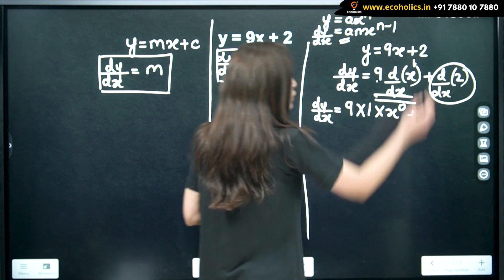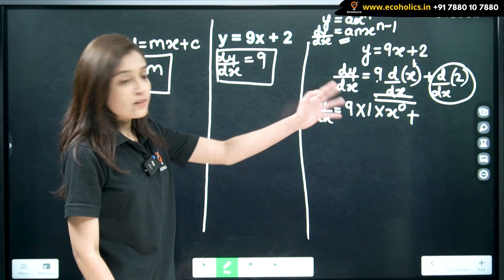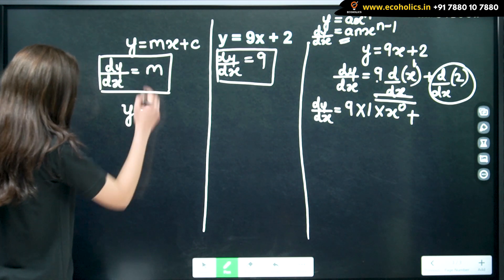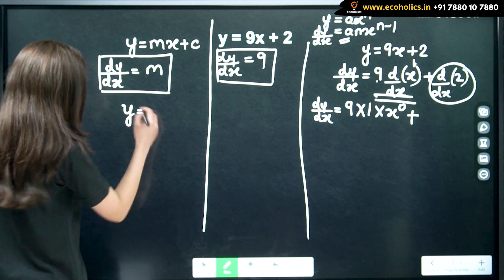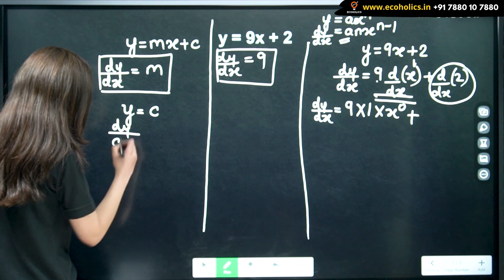So, we have already seen that differentiation of a constant term is 0. So, I will write all the formulas over here. So, when y is equal to constant, then dy by dx is 0.